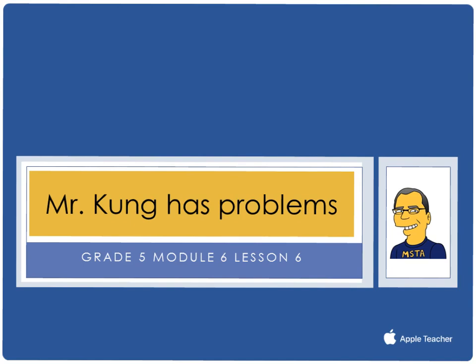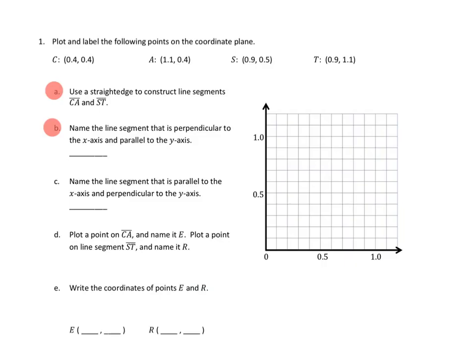Hello, and welcome to another episode of Mr. Kong Has Problems. Tonight in Grade 5, Module 6, we are working on Lesson Number 6, and that means we are investigating patterns in vertical and horizontal lines, and we are interpreting points on the plane as distances from those axes. So let's take a look at a couple of problems from tonight's homework.